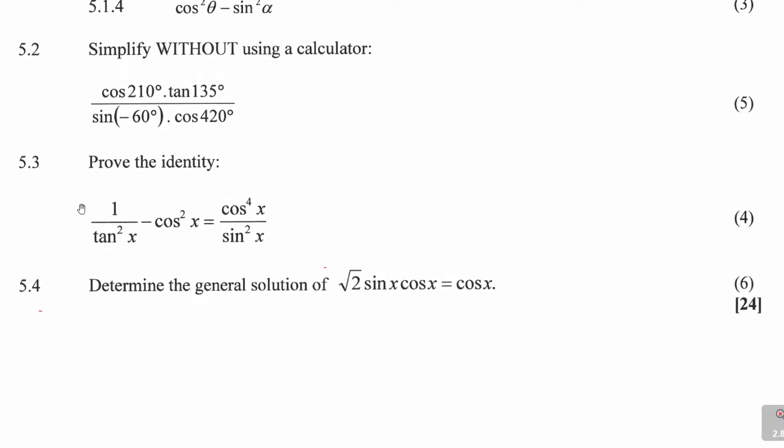And you know, when you are proving, you need to choose the side. There are two sides: the left-hand side and the right-hand side. Choose the side that you feel like I've got more than I can work on. In this case, let's look at the left-hand side. You can see that it's got more. I've got 1 over tan squared x minus cos squared x. I can do quite a few things on here. So I've chosen the left-hand side.